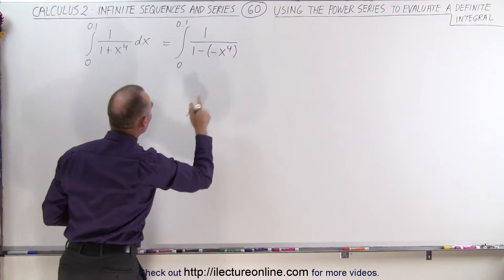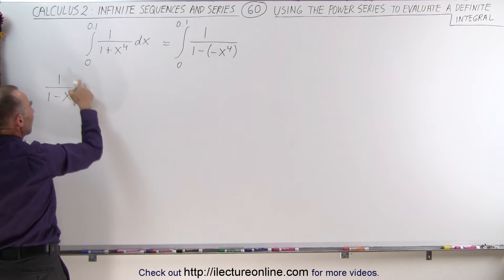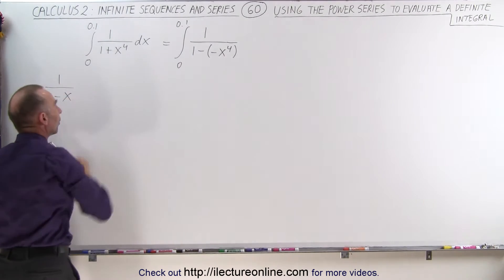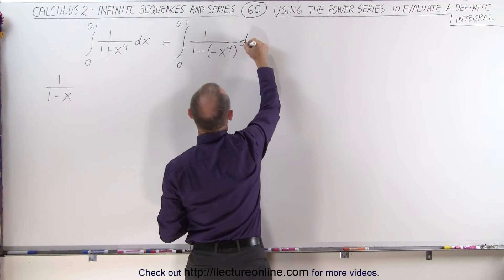So what we've done is we've written it into the form of 1 over 1 minus x, because we know what the infinite series of this looks like, and now this has the exact same form, which means we can now write this, and of course I should put a dx on there.